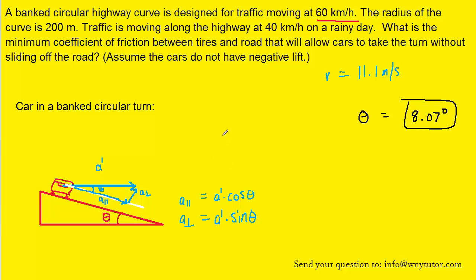And A perpendicular equals A prime times the sine of the angle. Now let's not forget that centripetal accelerations equal speed squared divided by the radius. In this case we have the centripetal acceleration broken up into two components - parallel to the ramp and perpendicular to the ramp.